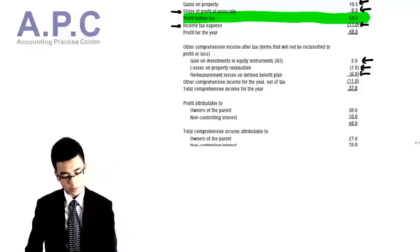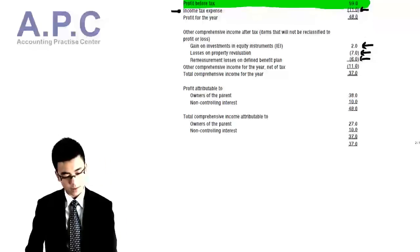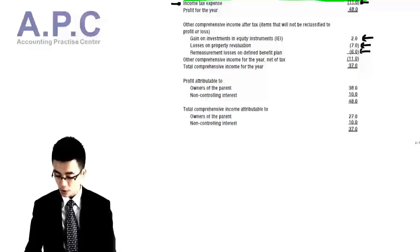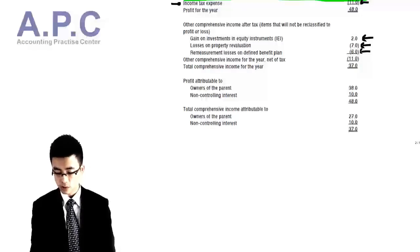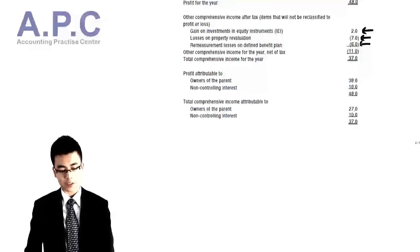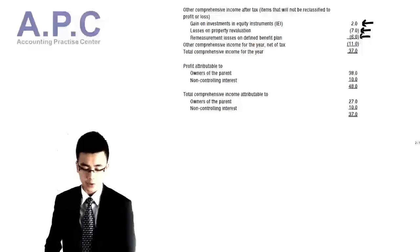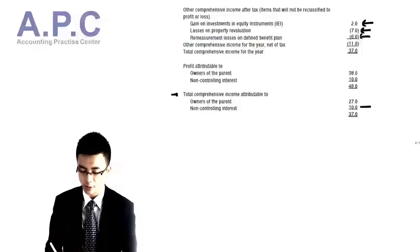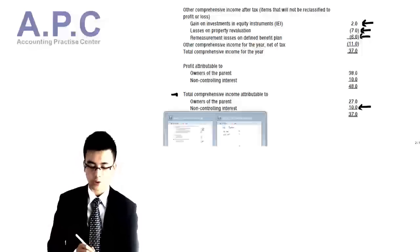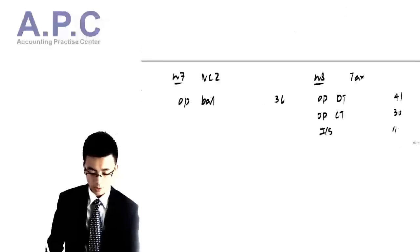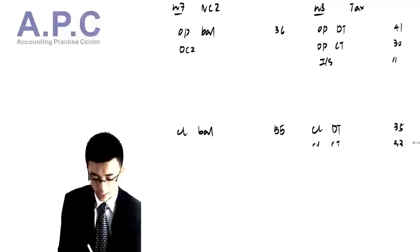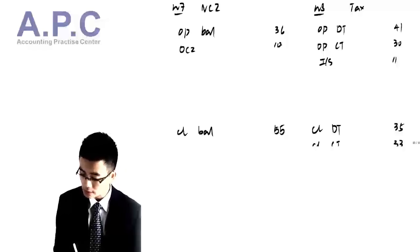For the pension — working number 9 — the OCI is 6 because it's a loss and, since we're accounting for the liability, the loss is positive. Under comprehensive income, we have profit attributable to owners of the parent — the controlling interest and non-controlling interest. The total comprehensive income attributable to NCI, working number 7, the income statement or OCI charge is 10.